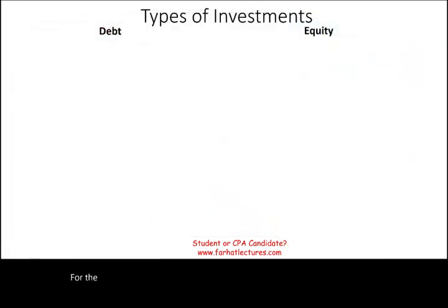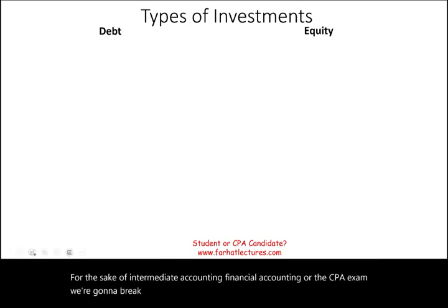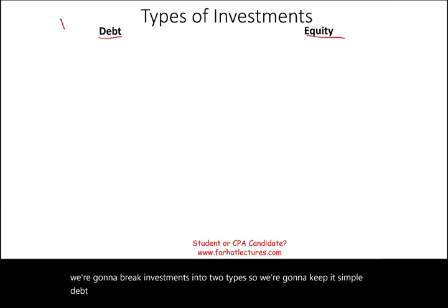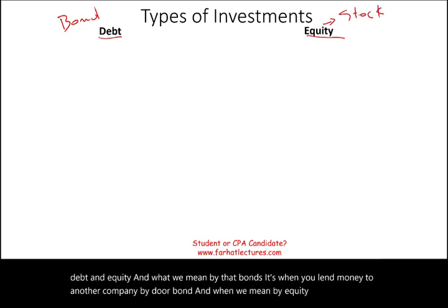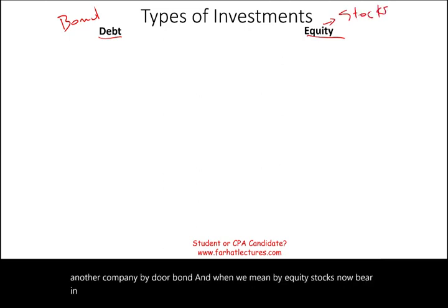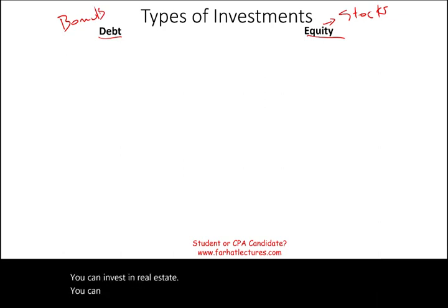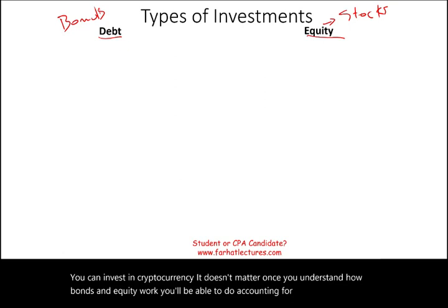For the sake of intermediate accounting, financial accounting, or the CPA exam, we're going to break investments into two types: debt and equity. By debt we mean bonds — when you lend money to another company by buying their bond. By equity we mean stocks. Bear in mind, those are not the only two types of investments — you can invest in gold, real estate, or cryptocurrency. But once you understand how bonds and equity work, you'll be able to do accounting for investments for any other type.